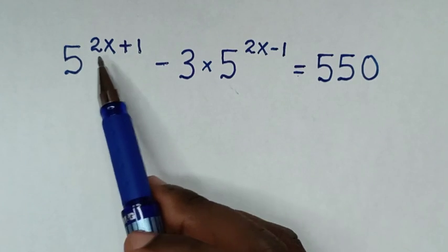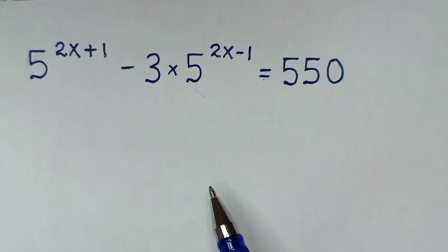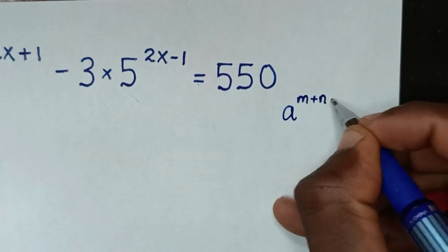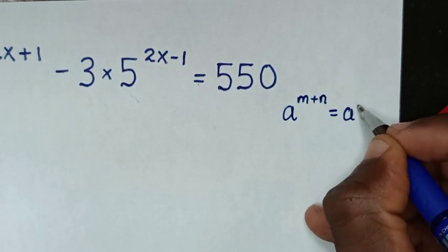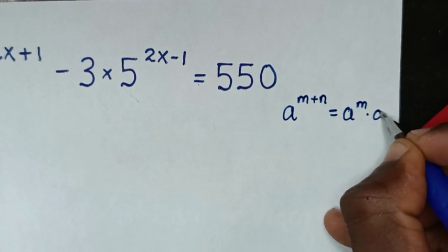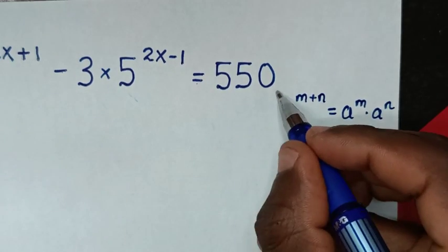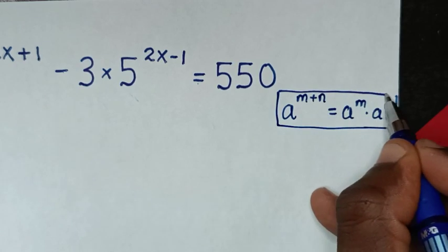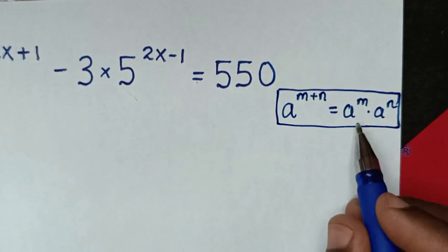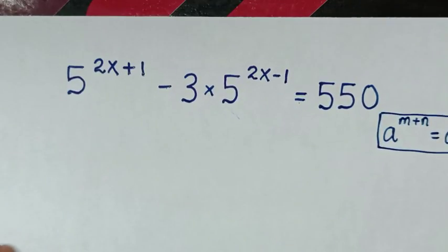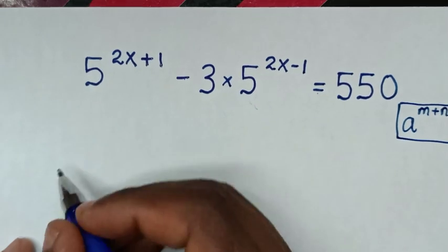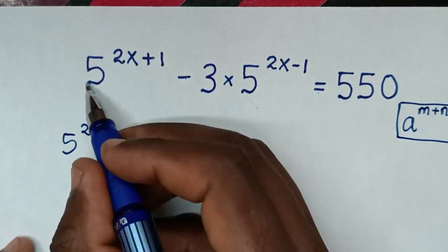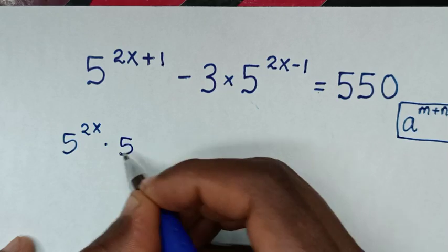From here, 5 power 2x plus 1 is in the form of a power m plus n, which is equal to a power m times a power n. So it will be multiplication of exponents: 5 power 2x times 5 power 1, which is the same as 5.